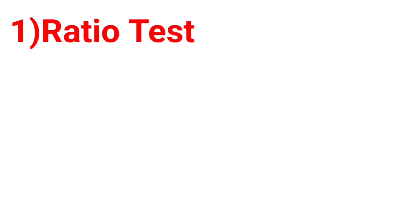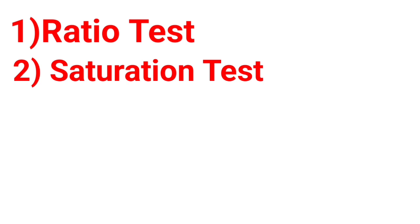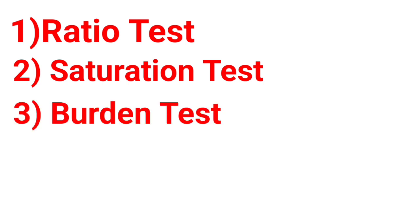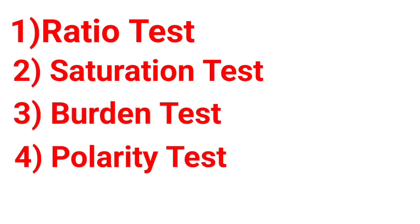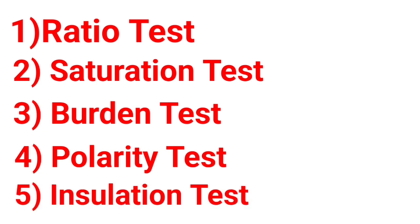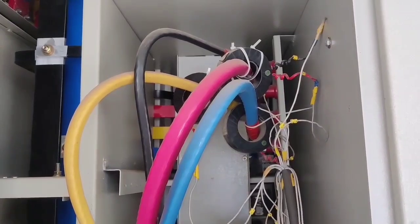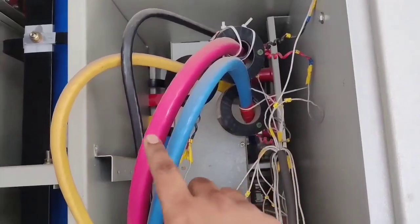The first method is the ratio test method — in this video we will identify whether a CT is OK or defective using this method. The second method is the saturation test method, and there is also the burden test method, quality test method, and the last one is the insulation test method. We can identify CT condition by all five methods, but in this video we will identify it by the ratio test method.